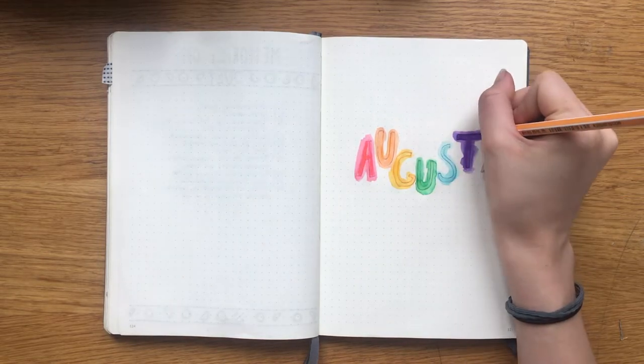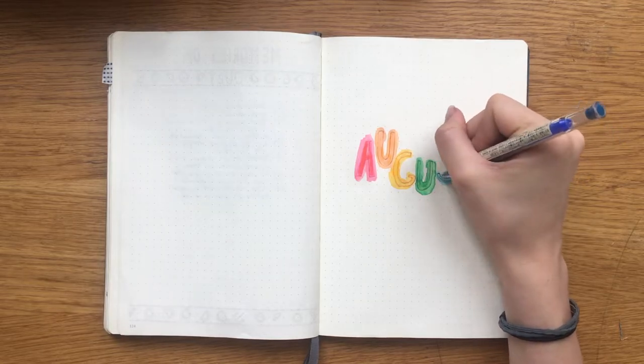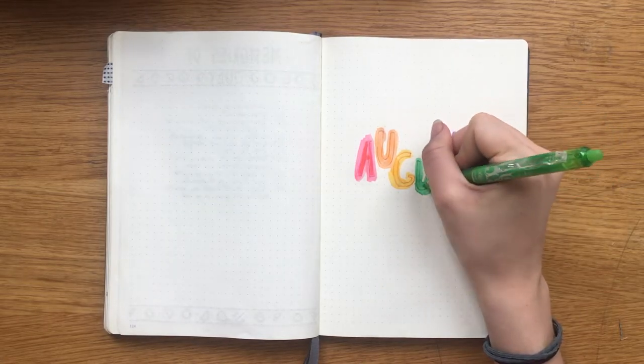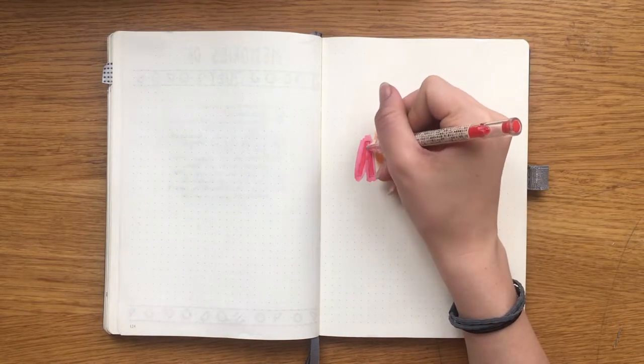Then to make sure you can still see that it actually says August and it's not just water blobs, I filled in the letters one more time and I think it turned out great actually.